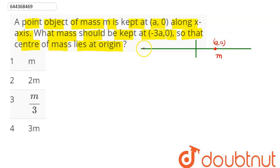Now here, at point (-3a,0), at this point, what mass should be kept? So, let's say capital M mass is being kept so that the center of mass of the system lies at the origin.